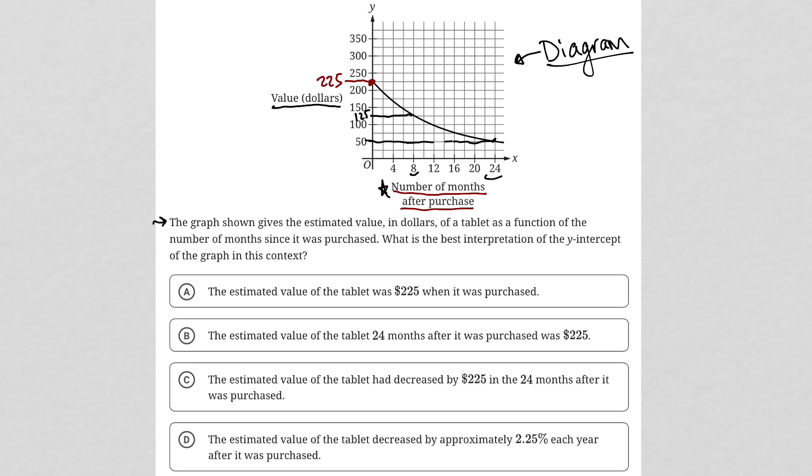So let's look at the answer choices and see what matches that understanding. Choice A says the estimated value of the tablet was $225 when it was purchased. That's exactly what this must mean. So I'm going to choose A, and that's our correct answer. Thank you.